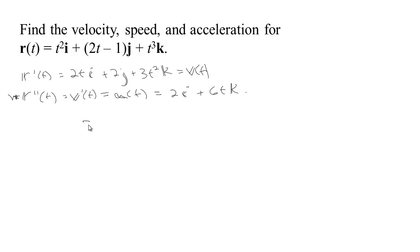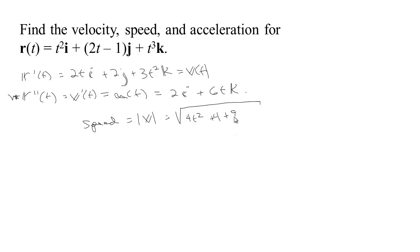We want the speed. The speed is going to be the length of the velocity vector. If you square 2T you get 4T squared, if you square 2 you get 4, and if you square 3T squared you get 9T to the fourth. So this particular vector-valued function has a speed that is not constant — the bigger T gets, the larger the speed gets, and the longer the velocity vector gets.